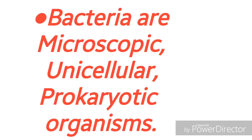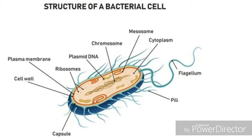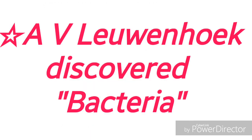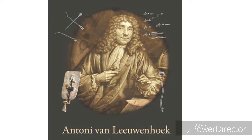Now let us see another interesting microscopic unicellular organism: bacteria. Bacteria are prokaryotic cells — they are single-celled but primitive in nature, and their cells are not much developed. They don't contain a prominent nucleus. Bacteria were discovered by the great scientist Leeuwenhoek. At that time science was not much developed, so like Robert Hooke, he made his own microscope and observed bacteria.